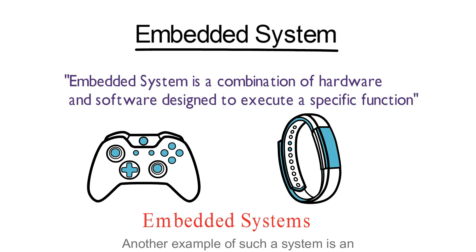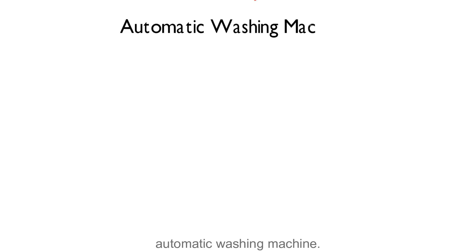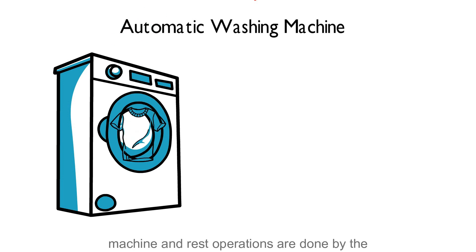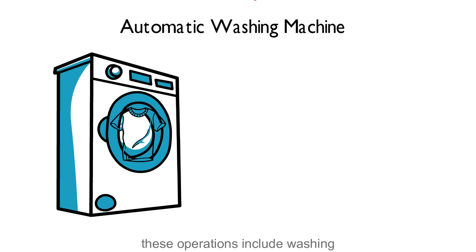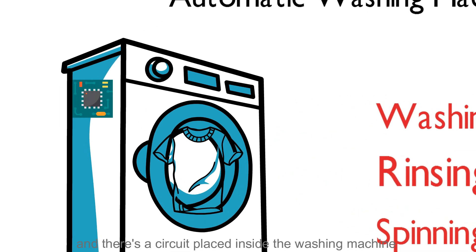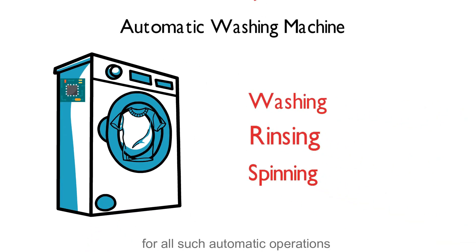Another example of such a system is an automatic washing machine. You just have to put the clothes in the machine and the rest of the operations are done by the machine only. These operations include washing, rinsing and spinning. And there is a circuit placed inside the washing machine that carries out the instructions for all such automatic operations.